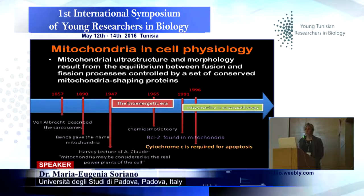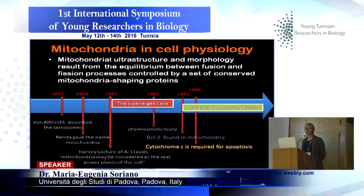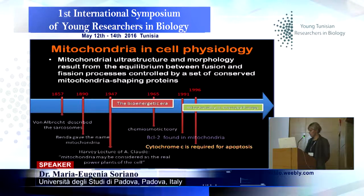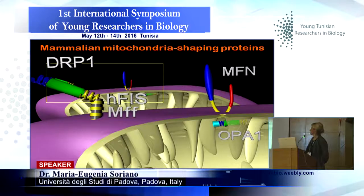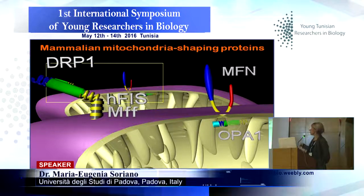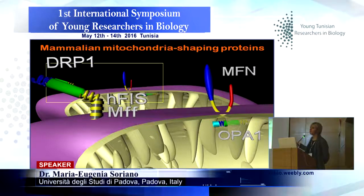This complicated mitochondrial infrastructure depends on the equilibrium between processes of fusion and fission. These processes are regulated by the so-called mitochondrial shaping proteins. In mammals, the main proteins involved are Mitofusin 1 and 2 in the outer mitochondrial membrane, and OPA1 in the inner mitochondrial membrane, both involved in pro-fusion activity. In fission, we have DRP1 and the adapters in the outer membrane, FIS and MFF.